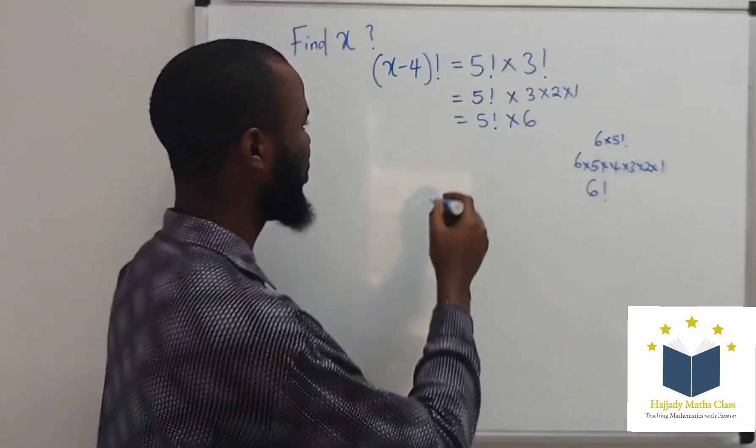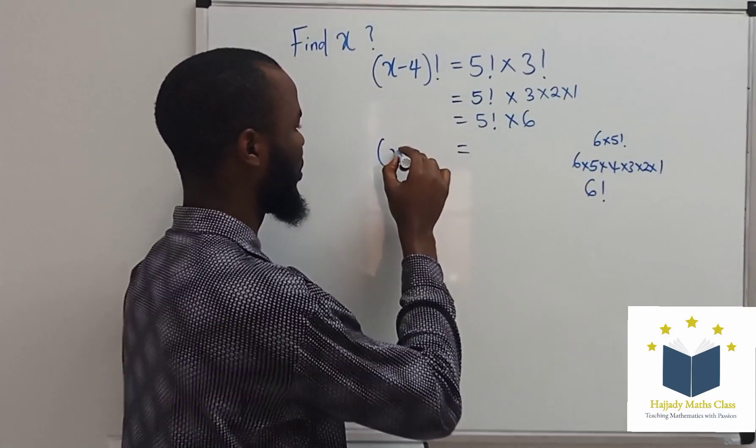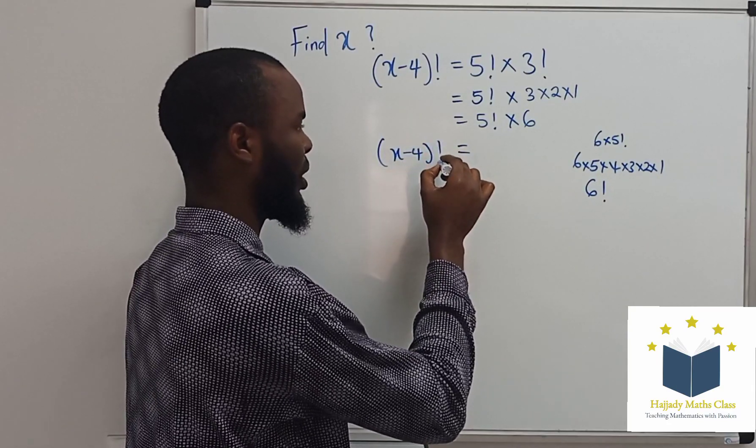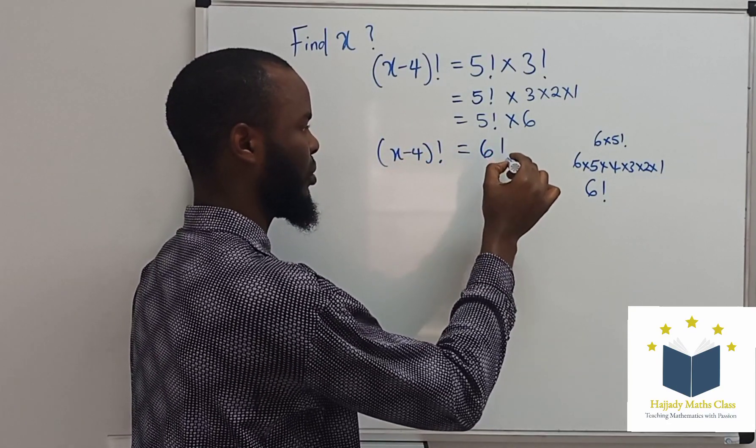So, using this rule, this is going to be x minus 4 factorial equals 6 factorial.